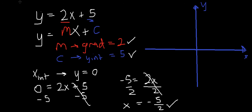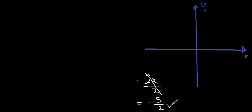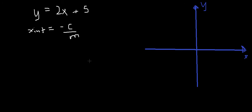I want to show you an even easier way to find the x-intercept. Our equation was y equals 2x plus 5. An even easier way is that the x-intercept is minus c over m.